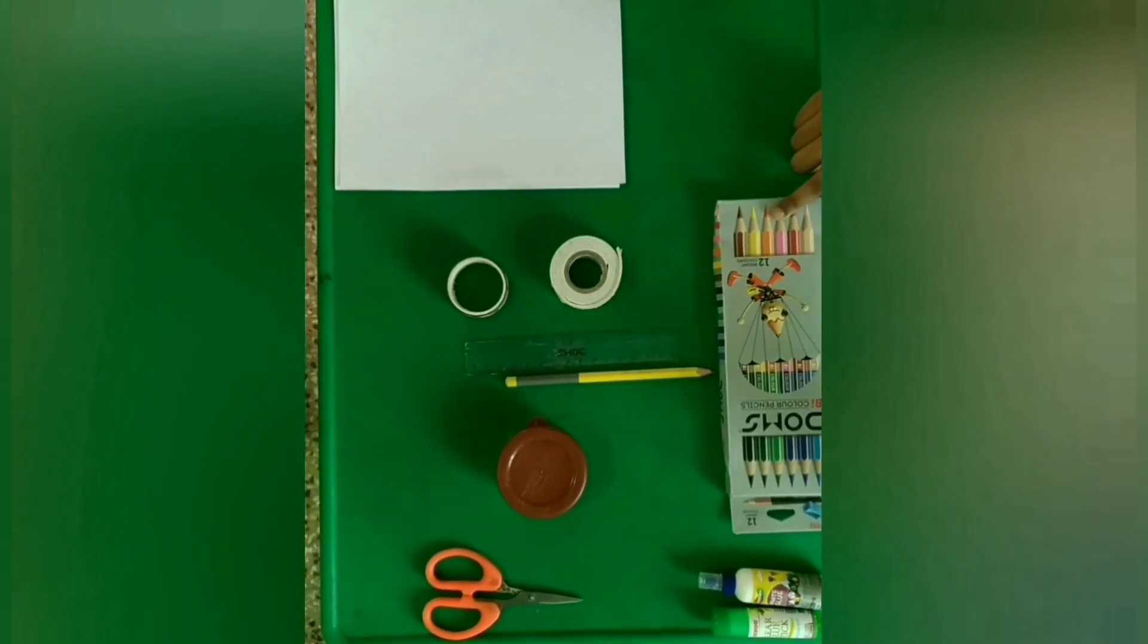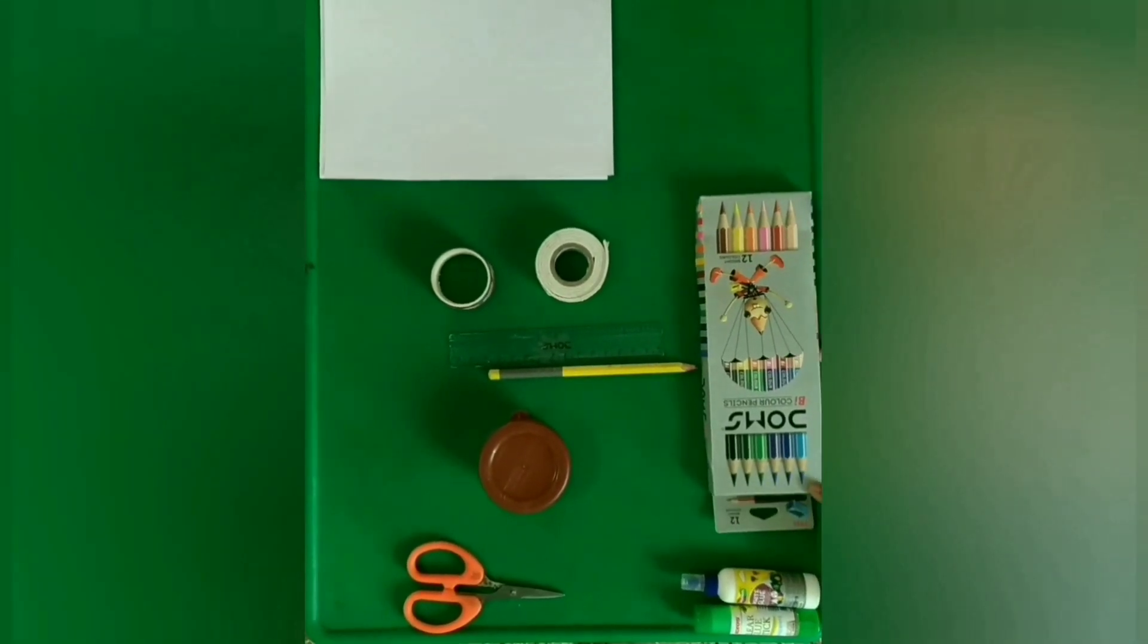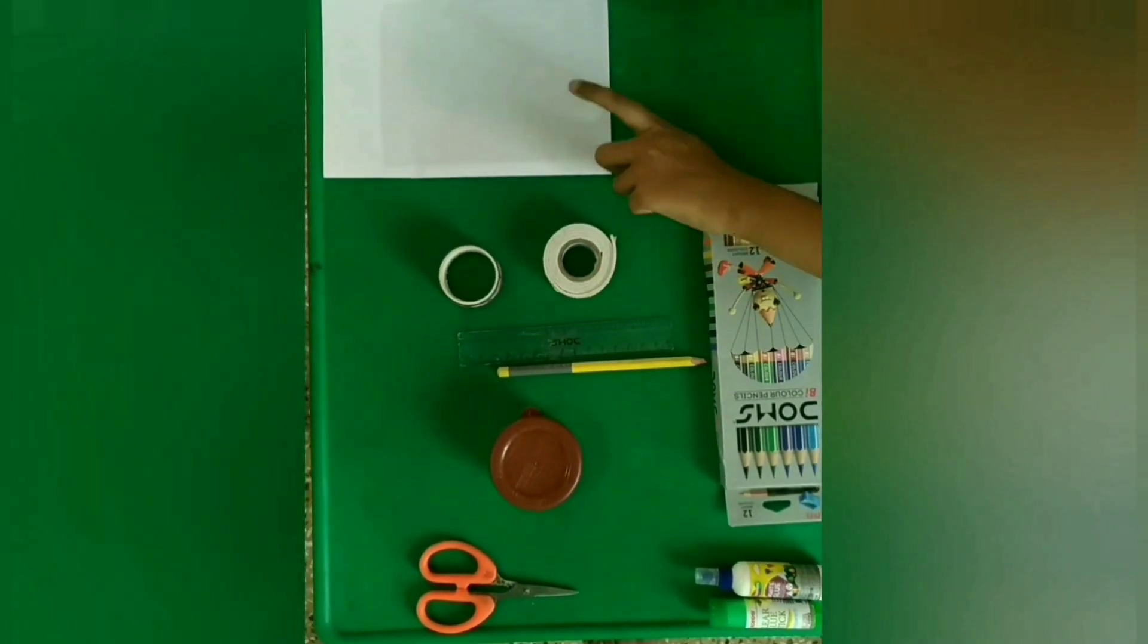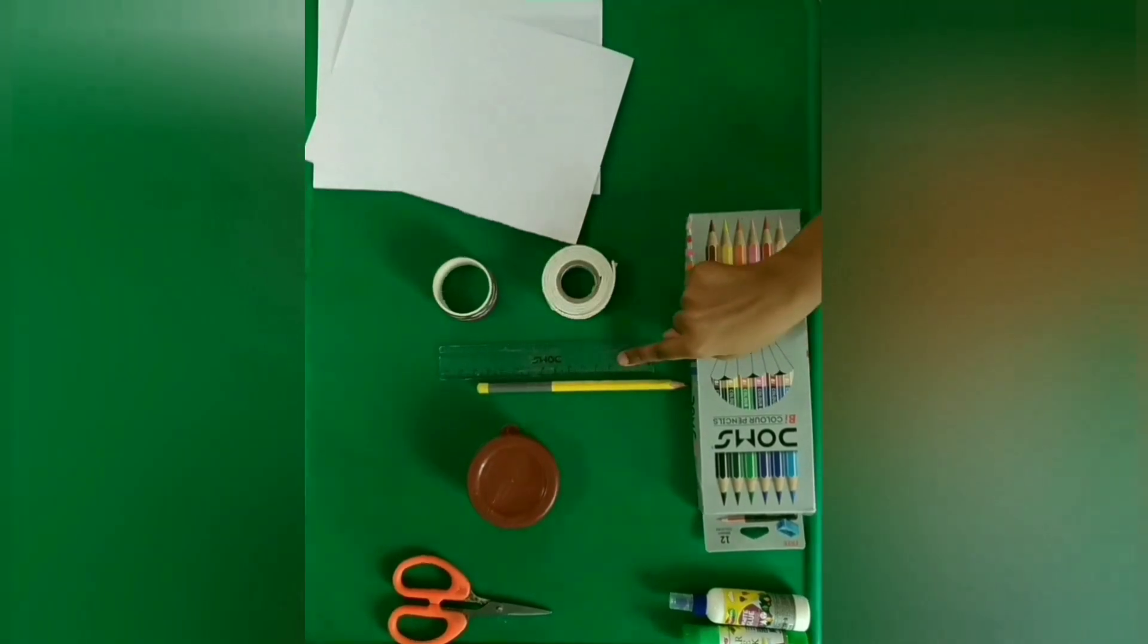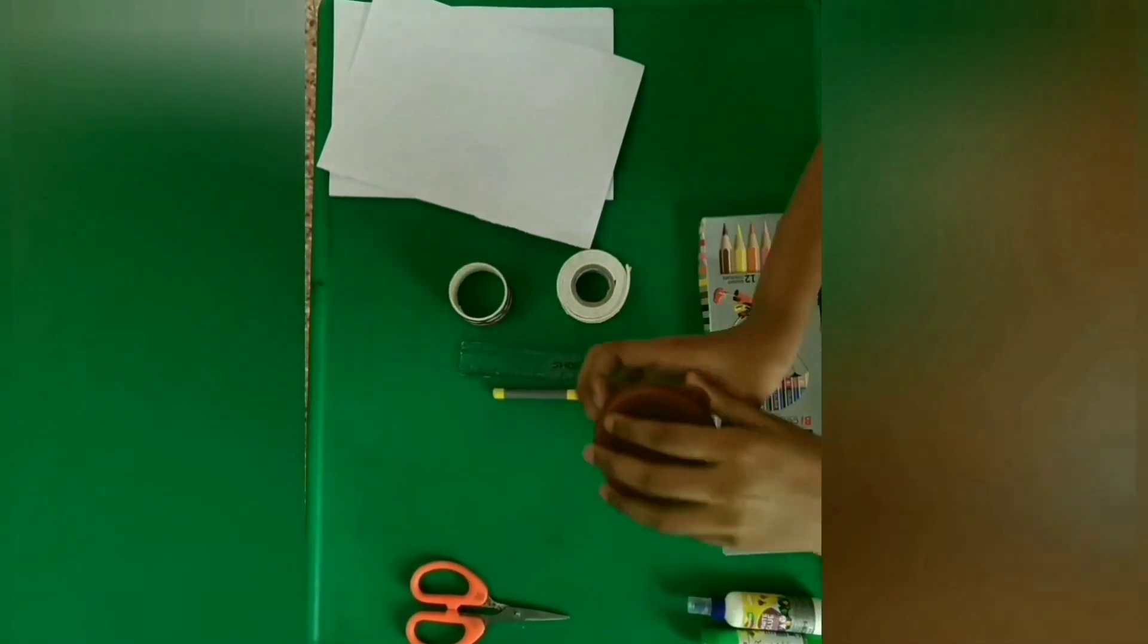Things you'll need: color pencil, glue, A4 sheet, OHP sheet, double-sided tape, designing tape, scale, pencil, and Orbeez.